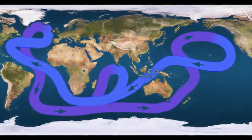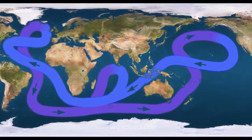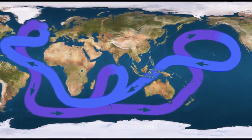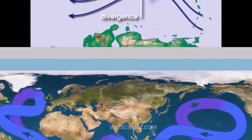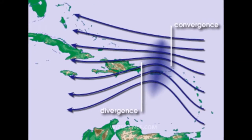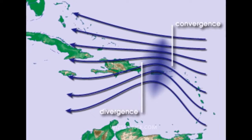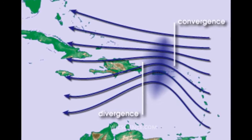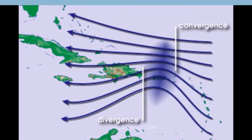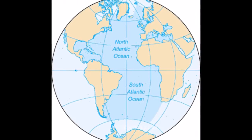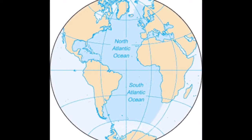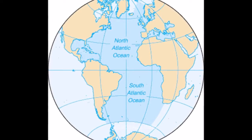Before Europeans discovered other oceans, their term 'ocean' was synonymous with the waters beyond the Strait of Gibraltar that are now known as the Atlantic. The early Greeks believed this ocean to be a gigantic river encircling the world.